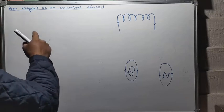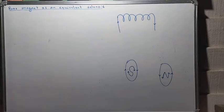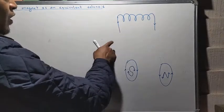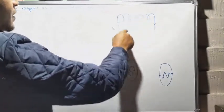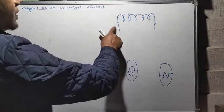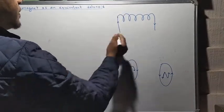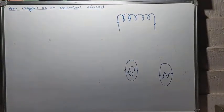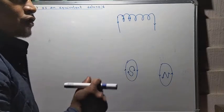Here we shall see how a solenoid carrying current behaves like a bar magnet. Look at this figure - suppose this is my solenoid and the current is passing through the solenoid in this direction. The two ends of the solenoid behave like the north pole and south pole of a bar magnet.